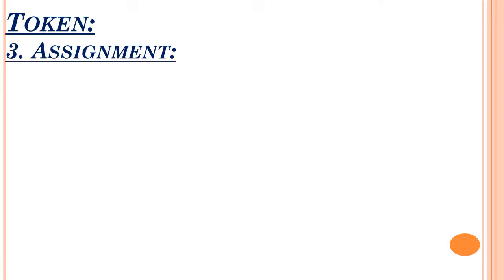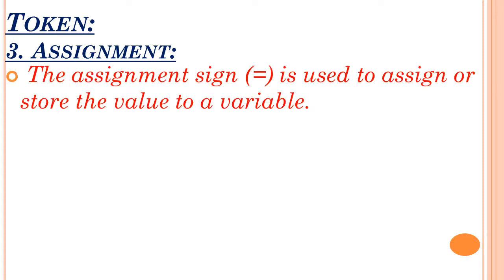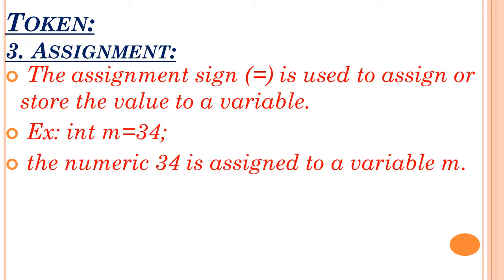Next is token. Token is nothing but an individual element in a program — we call it a token. The third type of token is assignment. The assignment sign, which is the equal sign, is used to assign or store a value to a variable. For example, 'int m = 34' — here m is an integer type variable and 34 is the value assigned to it.